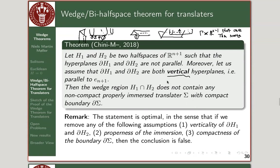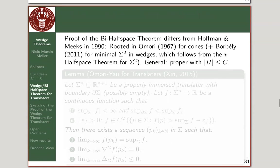I already explained how the proof goes in the case of minimal surfaces of Hoffman and Meeks, where they used what I call apple slices — boundaries of a ball intersected with the wedge, which you solve the Plateau problem on and use as a barrier. But we're going to go back in time for an argument, because Omori already showed, via the Omori principle, that you cannot have minimal surfaces sitting inside a cone — a special case, since cones sit inside wedges.